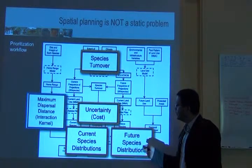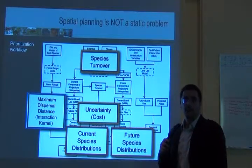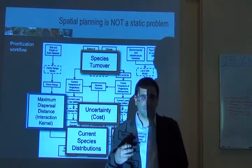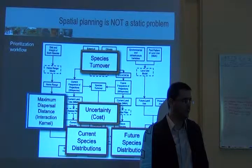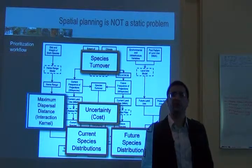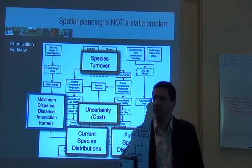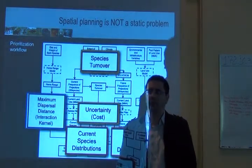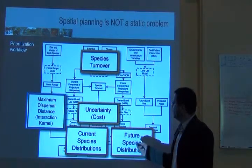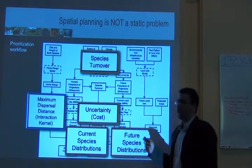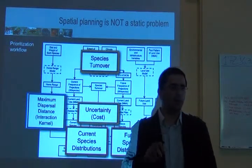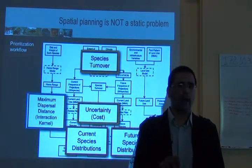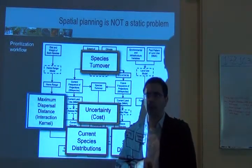You can treat this uncertainty like a cost. The places for which you have high uncertainty are not good places to invest in conservation. If you're not sure if a species is there, why put dollars into that place? It doesn't make sense. So you can use this as a constraint in the analysis.